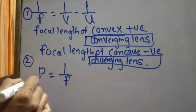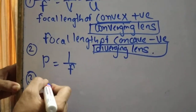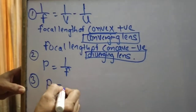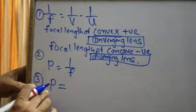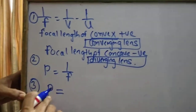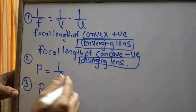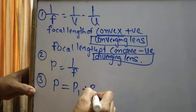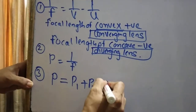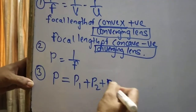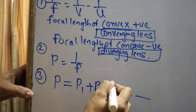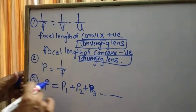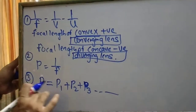Third formula: combination of lenses. The effective power of a combination of lenses is P equals P1 plus P2 plus P3, and so on.